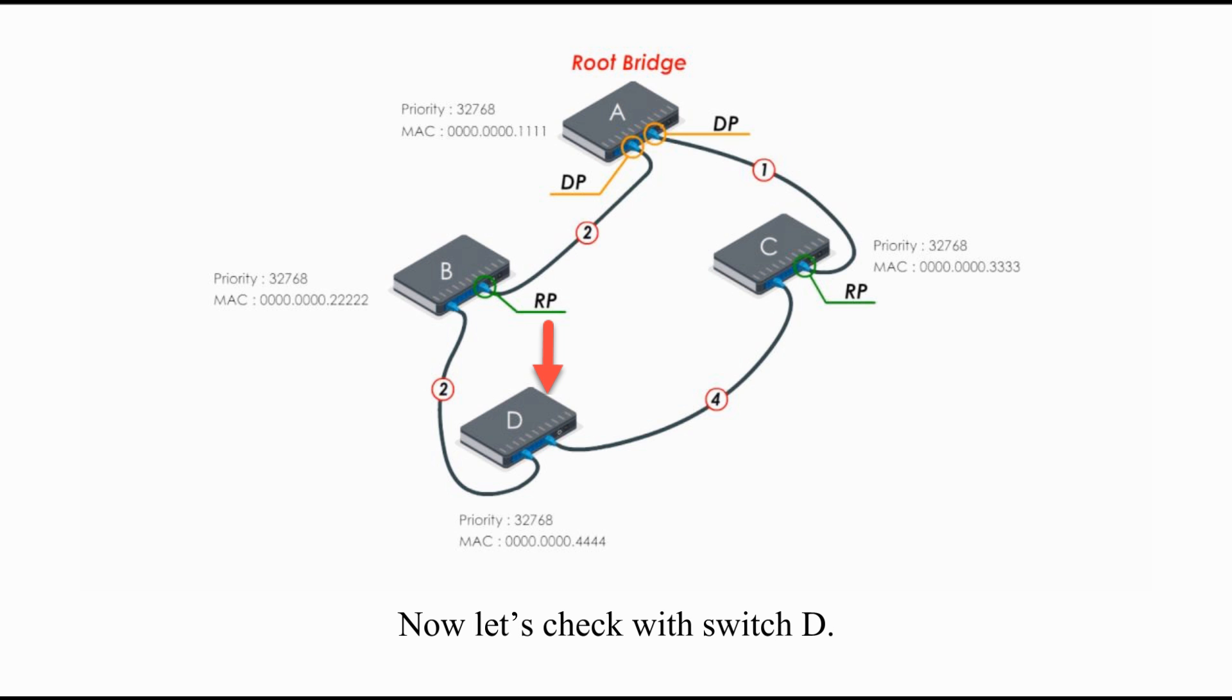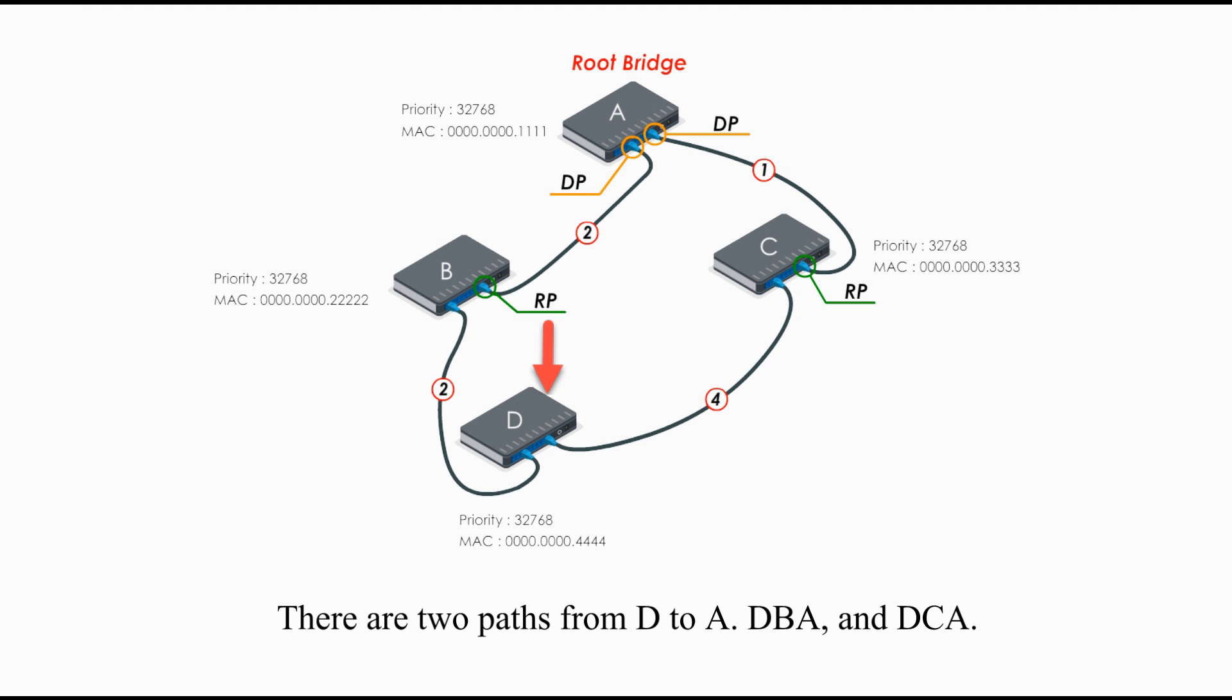Now, let's check switch D. There are two paths from D to A: DBA and DCA. DBA costs 4 and DCA costs 5. Thus, DBA is the preferred path. This port is selected as a root port. The other end on switch B is a designated port.